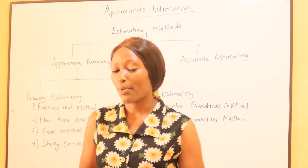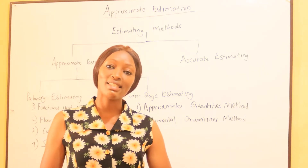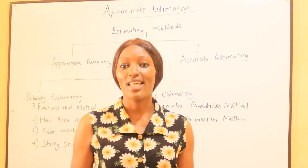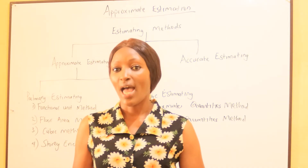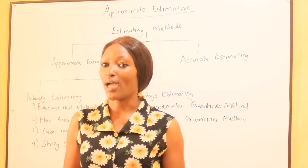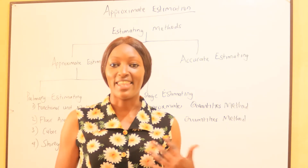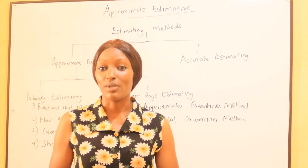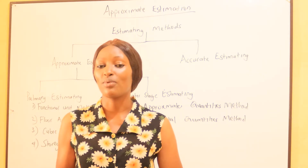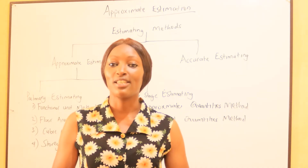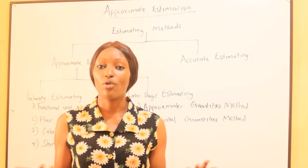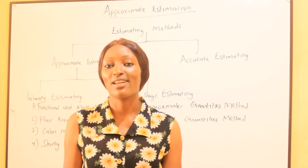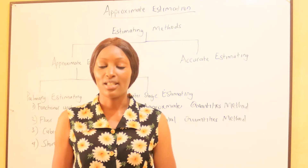In this video we shall come to realize that there are methods that quantity surveyors use to do approximate estimations, and these methods give answers within the shortest time possible. We have already talked about the Bill of Quantities — this is a method used for accurate estimation. The Bill of Quantities is used when entering into contract between the contractor and the client, so it has to be very accurate. We look at every item by item together with the specifications, and pricing is according to specification — for example the concrete ratio 1:1:2:3, or mortar ratio 1:3.